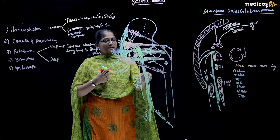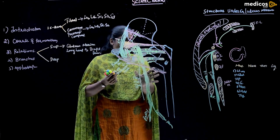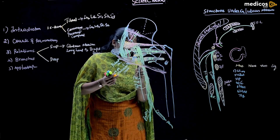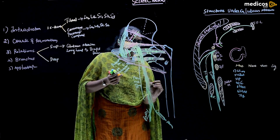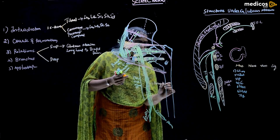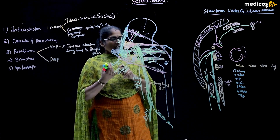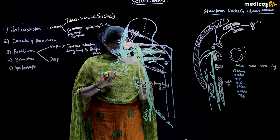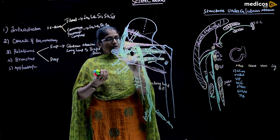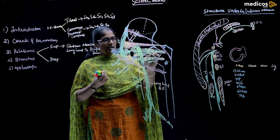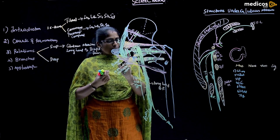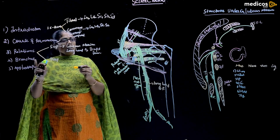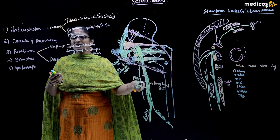The sciatic nerve supplies the muscles of the posterior aspect of the thigh mainly from its medial aspect. From the lateral aspect, it gives only one branch — to the long head of biceps femoris. All other muscles, like adductor magnus, semimembranosus, and semitendinosus, are supplied from the medial side. It also gives an articular branch to the hip joint. The lateral side of the sciatic nerve is therefore safer.